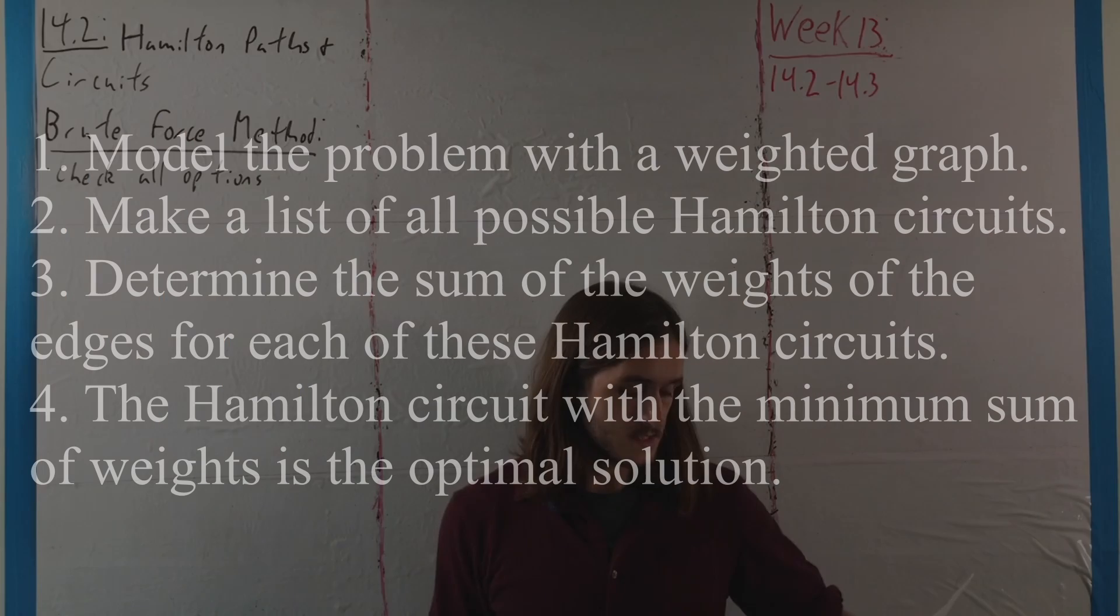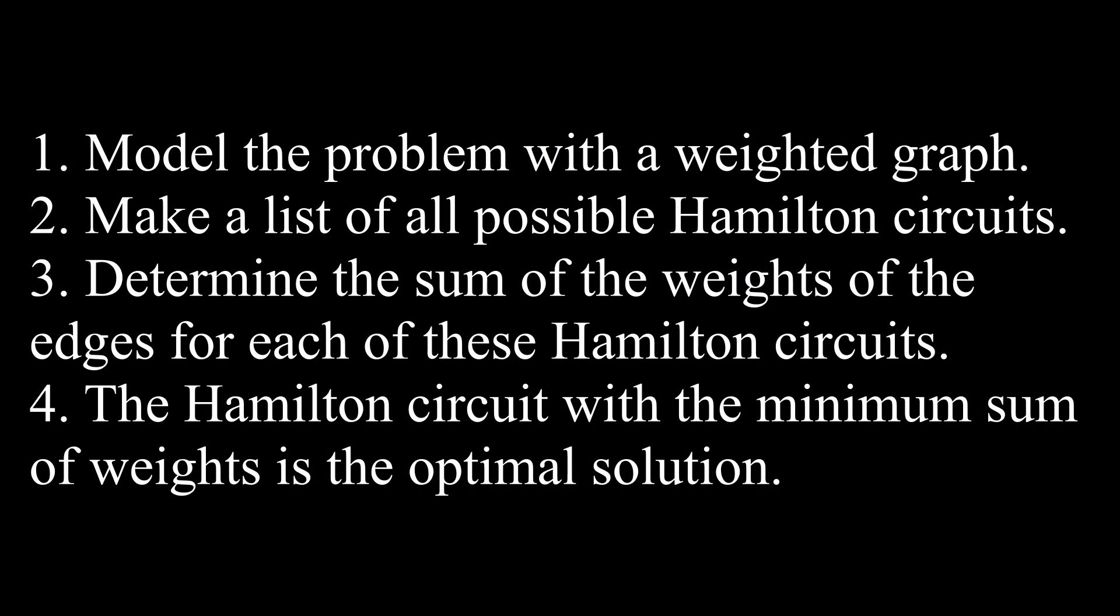What we want to do here is model the problem with a weighted graph, then make a list of all possible Hamilton circuits, then determine the sum of the weights of the edges for each of the circuits, and pick the one that has the minimum.